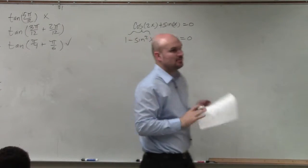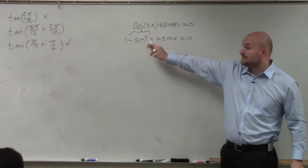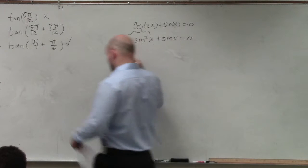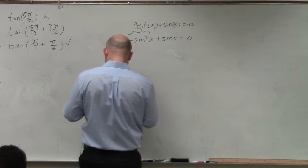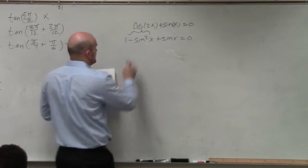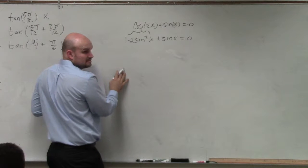That is my double angle formula. So now I can say, let's go ahead and rewrite this. Was that a 2 sine of cosine x? Wait, is this 1 minus 2? Sorry. I did it right there. OK, yes?